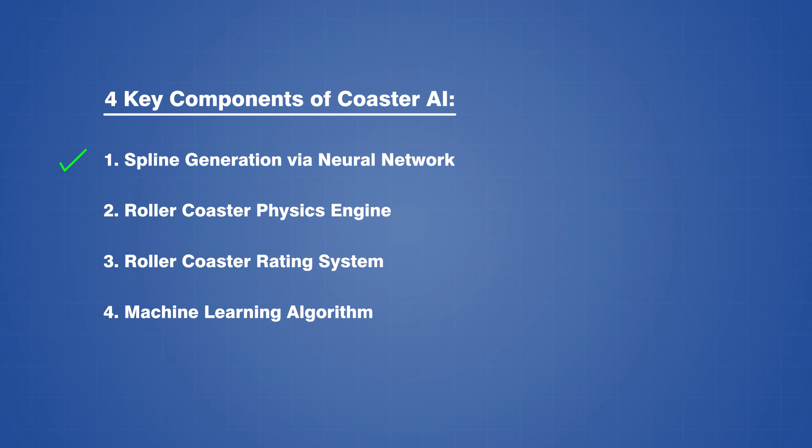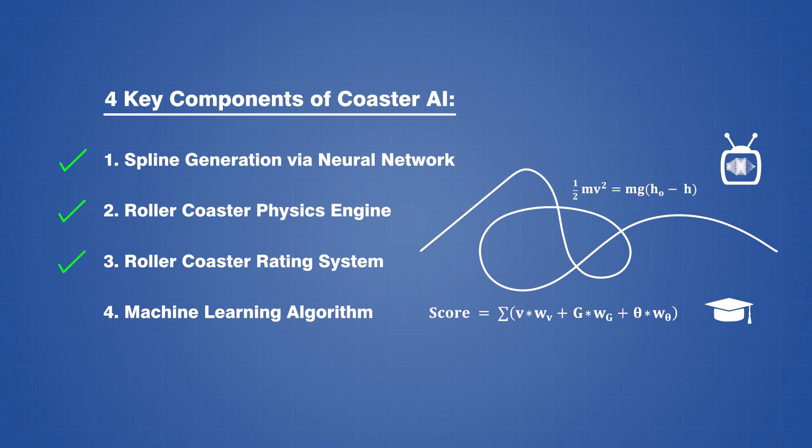So to briefly recap up to this point, we currently have a bot that can generate a random track spline using a neural network, and we also have a physics engine to analyze that spline, as well as a rating system to quantify how well it meets our criteria for a good rollercoaster.